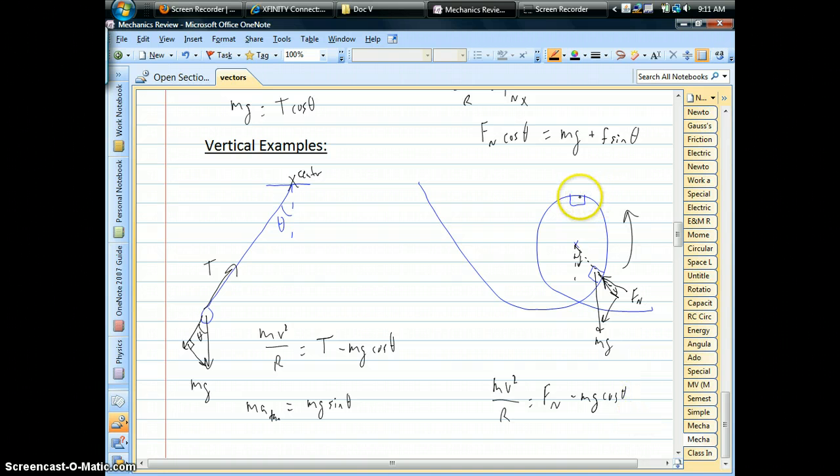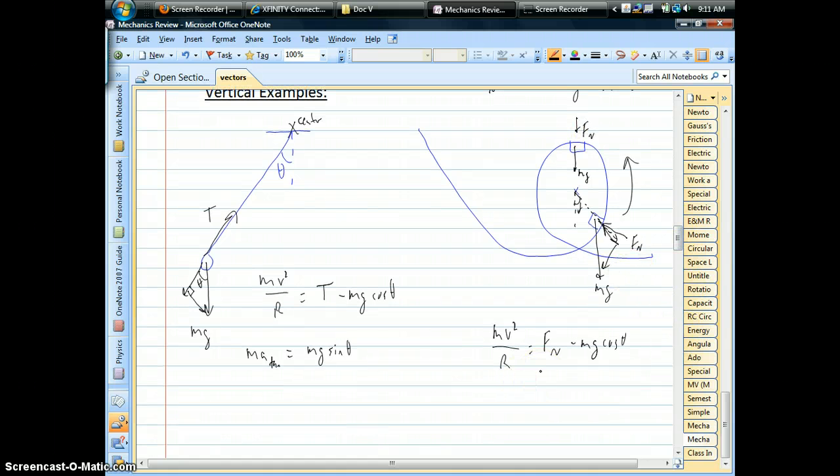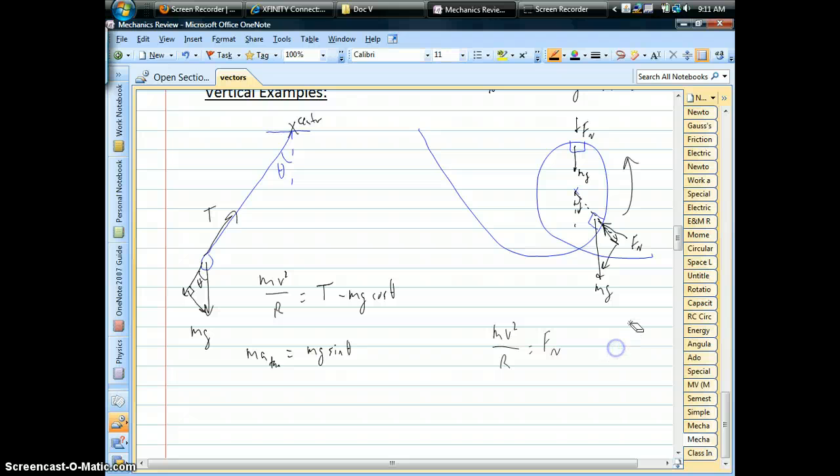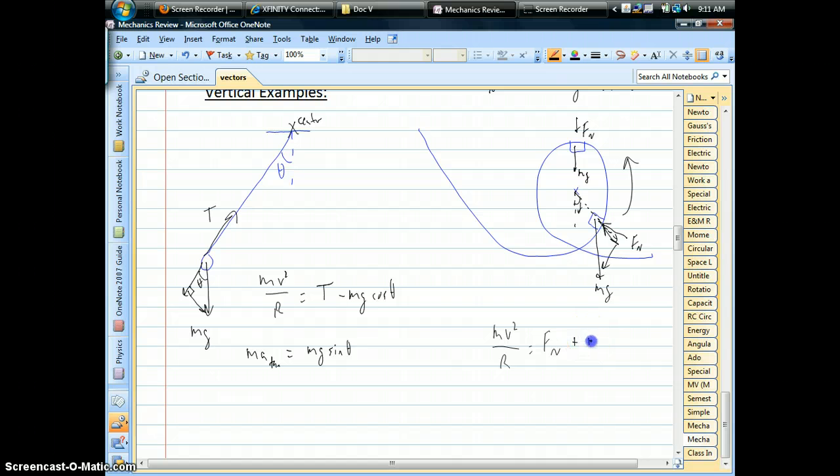Whereas at the top, your force diagram is you have gravity and normal force pointing downward right towards the center. Notice that right where you are in your circle, normal force is pointing towards the center. But for the top half, you actually add the contribution of gravity. If you're at the very highest point of the loop, all of your weight is pointing straight down, so that's part of your centripetal force.